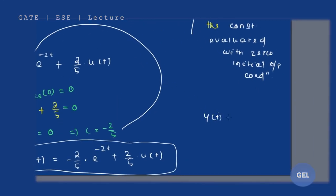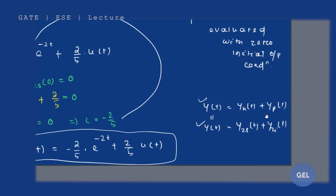Normally in the complete solution we do y_h(t) + y_p(t), and in signals and systems we do zero state response plus zero input response. These two are equal and the answer will be equal, but the process is different. In the next video lecture we will solve a problem and check the answer by both methods.